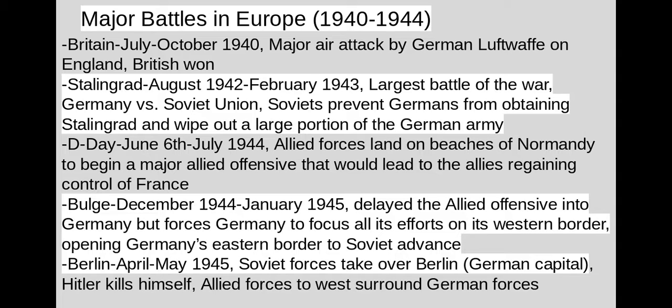Jumping forward to D-Day, which begins June 6th through July of 1944 — this was the Normandy campaign that takes place starting in northern France, with the Allies trying to regain control of France from the Axis powers. Following the Normandy campaign, going into the winter of 1944 into 1945, we have the Battle of the Bulge. This battle prevents Allied forces from continuing into Germany but forces Germany to focus all its efforts on that western border, which opens up their eastern border to further attacks from the Soviets.